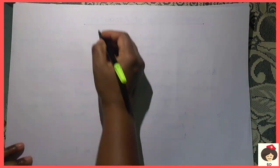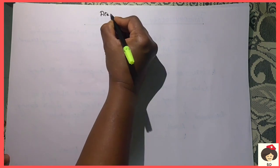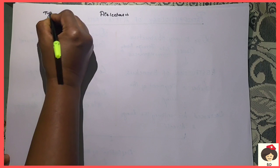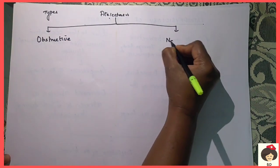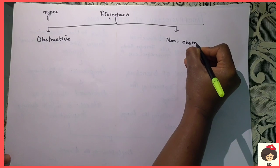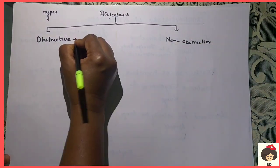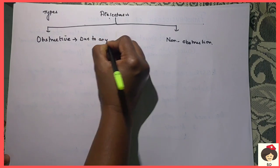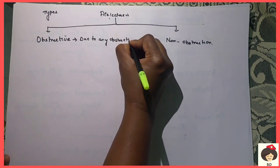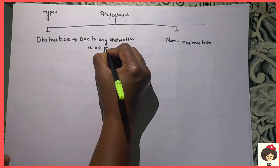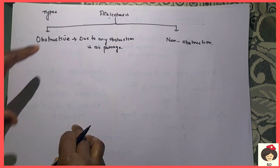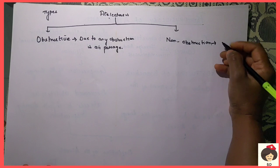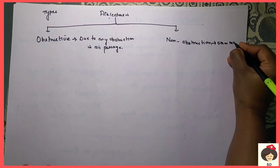Next, coming to the types of Atelectasis. Atelectasis is divided mainly into two types: one is called obstructive Atelectasis and the other is non-obstructive Atelectasis. As the name suggests, if due to any obstruction in the air passage the oxygen is not entering the alveoli, the alveoli is deflated and collapsed, then we call it obstructive Atelectasis.